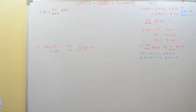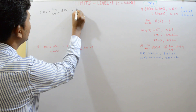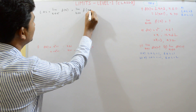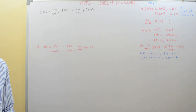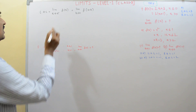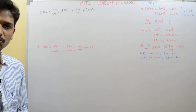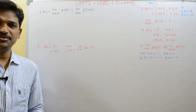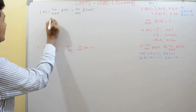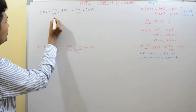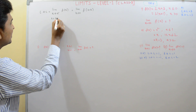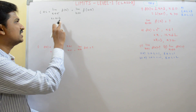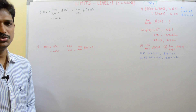We won't use this directly — we will convert this limit into the form: limit h approaches to 0, f of a minus h. What happened here? As x approaches to a from left, all x values are less than a and very, very near to a. When x is less than a and very near to a, x can be written as a minus h, where h is a very small positive quantity.